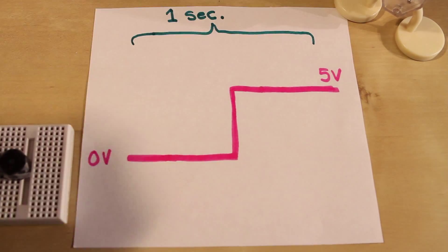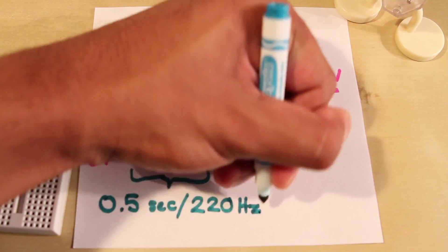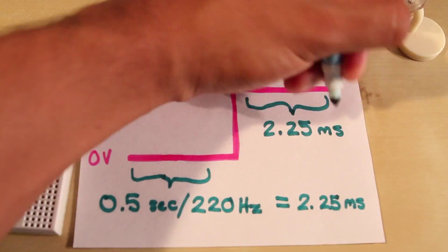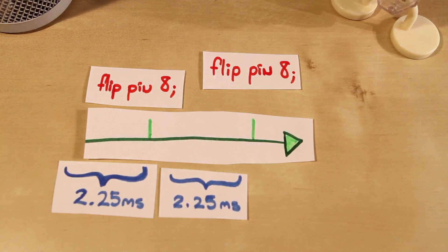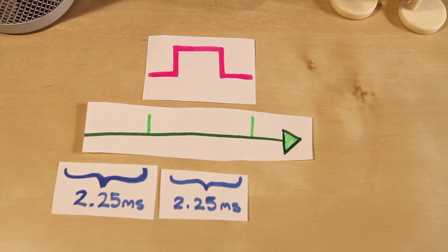With simple math, you can figure out how long the buzzer is set to high or low. For A, it is 2.25 milliseconds in order to achieve a 220 hertz tone. This means we need to interrupt our Arduino every 2.25 milliseconds and flip the voltage being sent to our buzzer. And that's it!